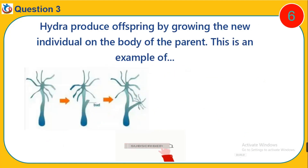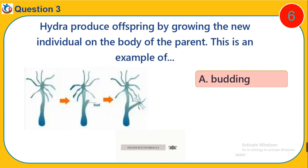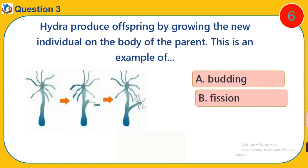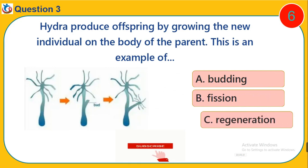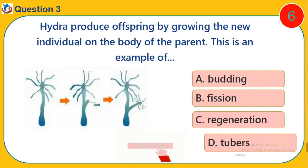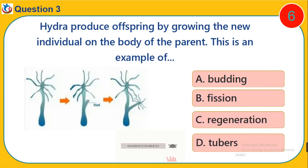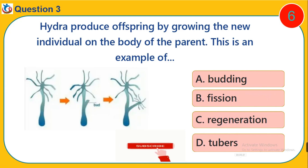Question 3. Hydra produce offspring by growing the new individual on the body of the parent. This is an example of: A. Budding. B. Fission. C. Regeneration. D. Tuber.